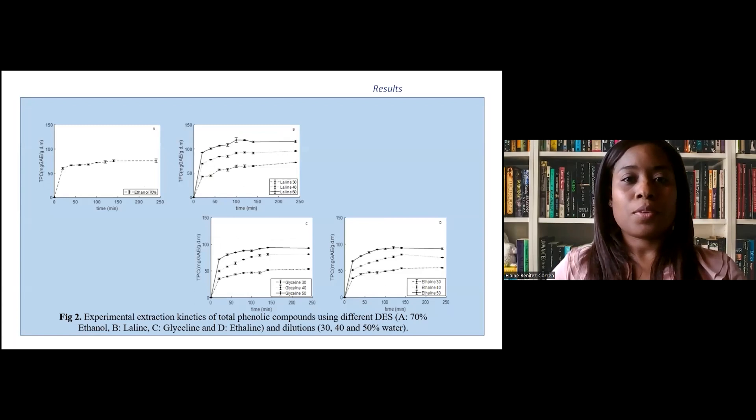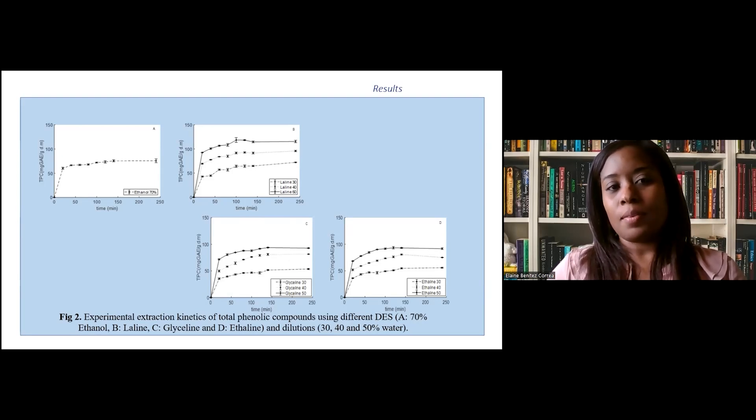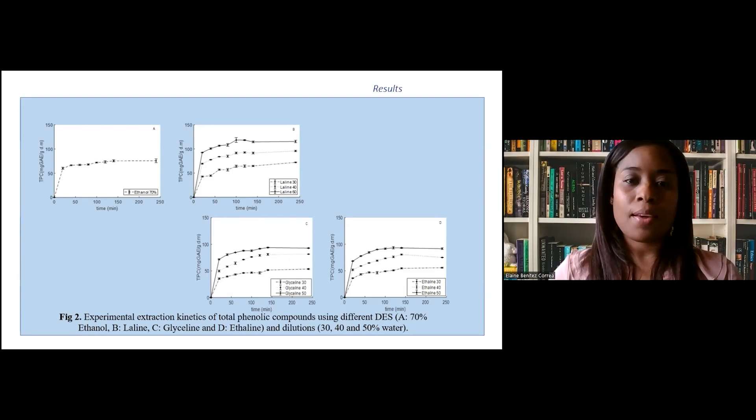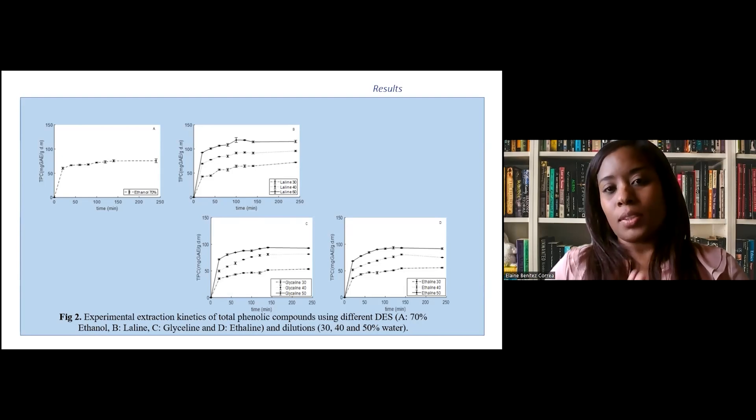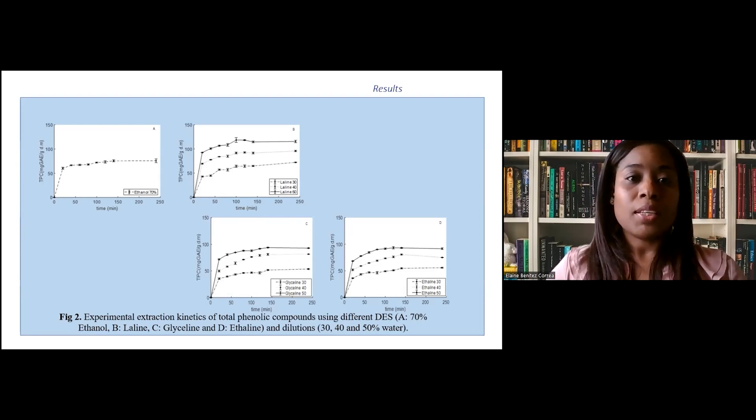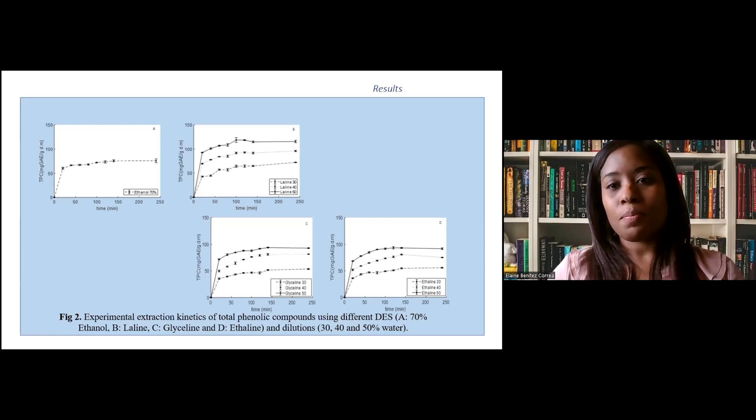Images represent extraction kinetics of total phenolic compounds. There are differences in the performance of deep eutectic solvents and dilutions due to the hydrogen bond donor system used in synthesis and also due to water content of the solvent. Although the results confirmed a weakening of the structure of deep eutectic solvents by the addition of water, performance of the solvent is not affected, at least for water percentage between 30 and 50%. Moreover, as water content increases, extraction ability increases, being laline solvent with 50% water the most efficient solvent for extraction of total phenolic compounds, followed by glyceline and ethylene with 50% water.